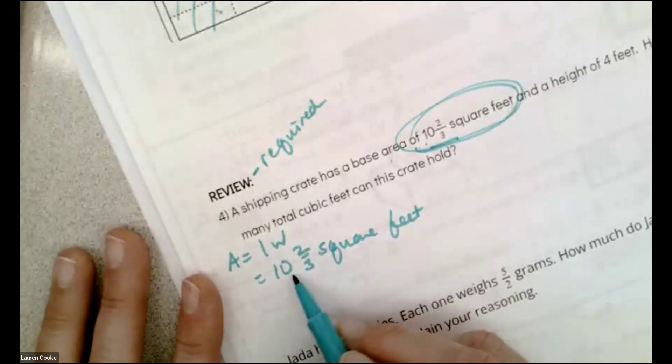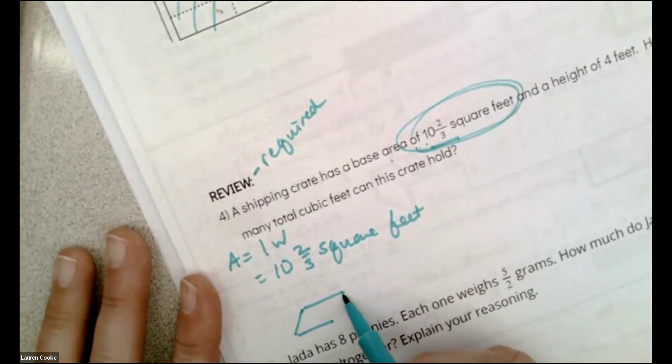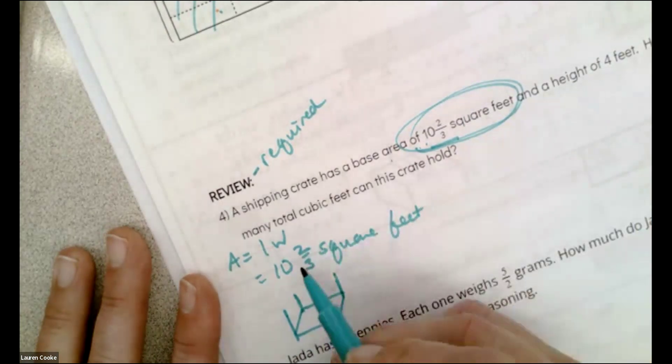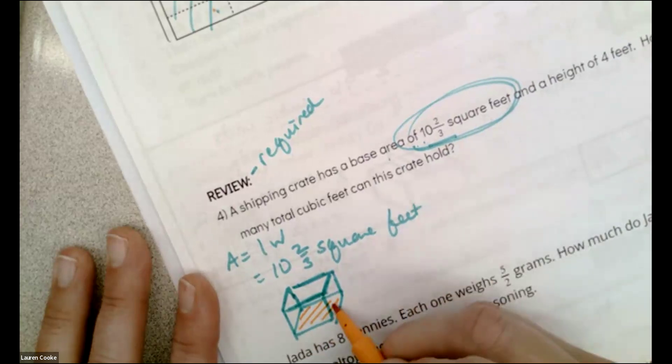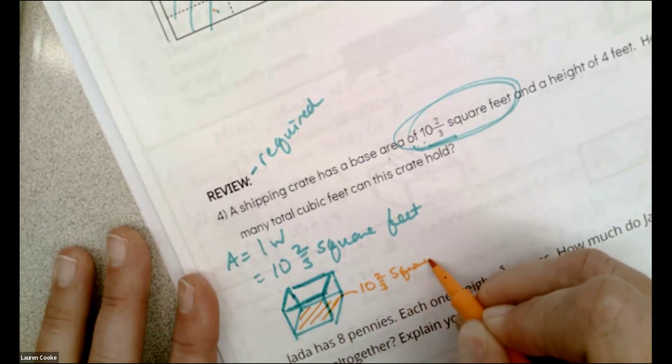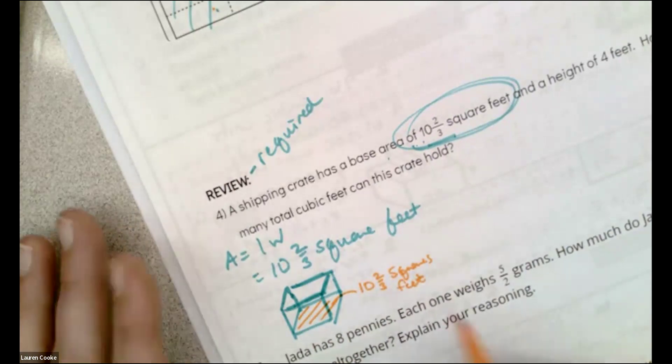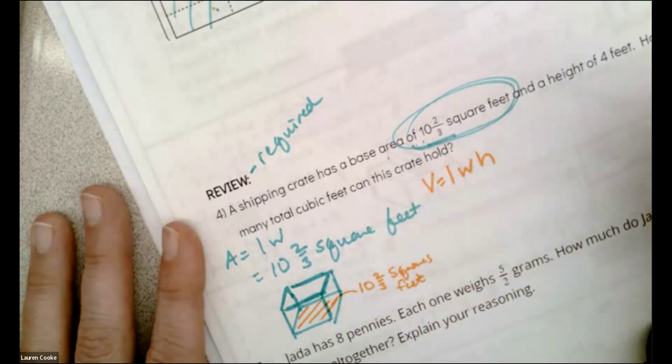So if I'm thinking about my shipping crate, and 10 and two-thirds square feet is like quite big, I'm thinking that this bottom area here, I'm going to write in orange, this bottom area here is 10 and two-thirds square feet. So I already know that.